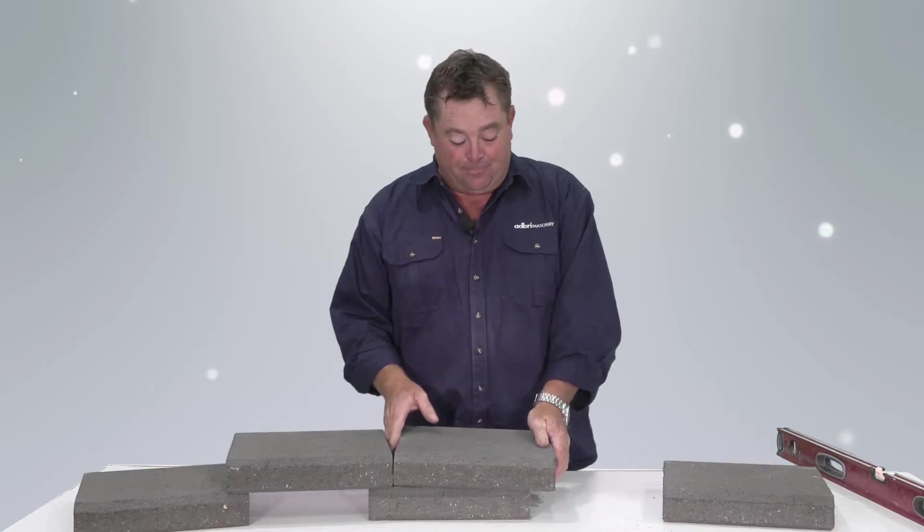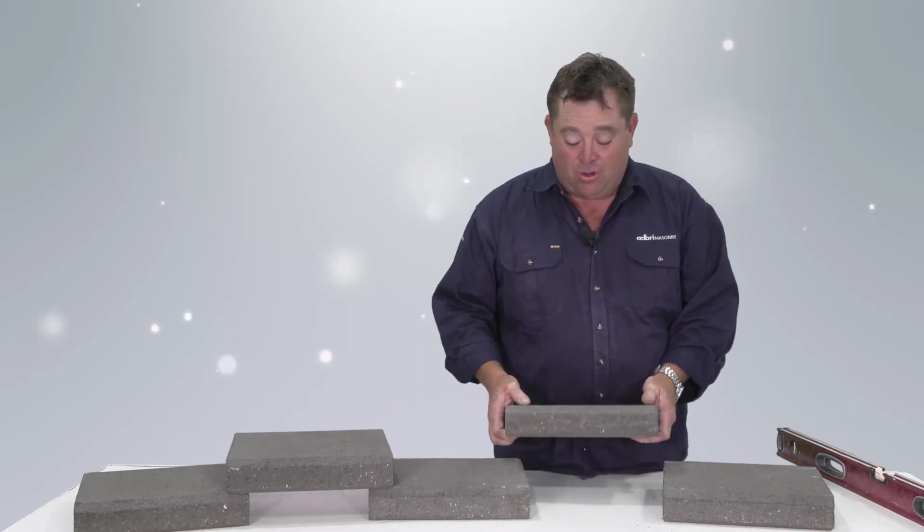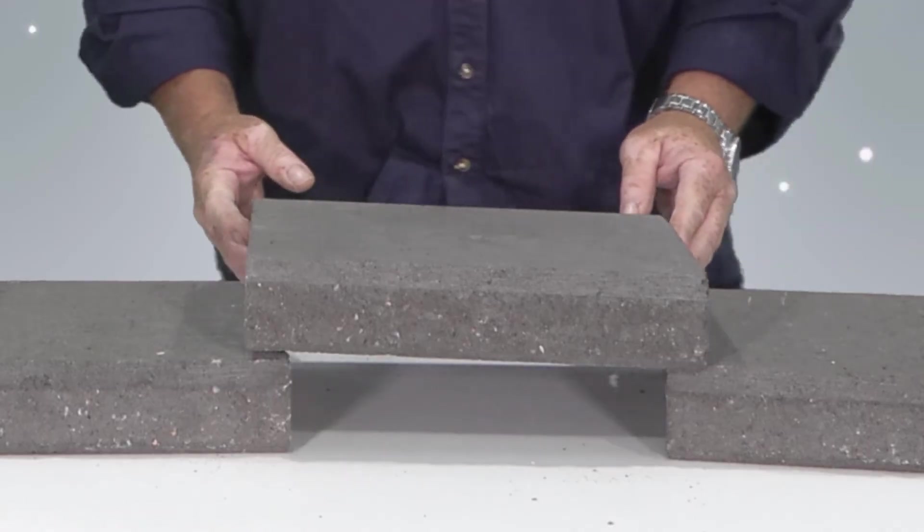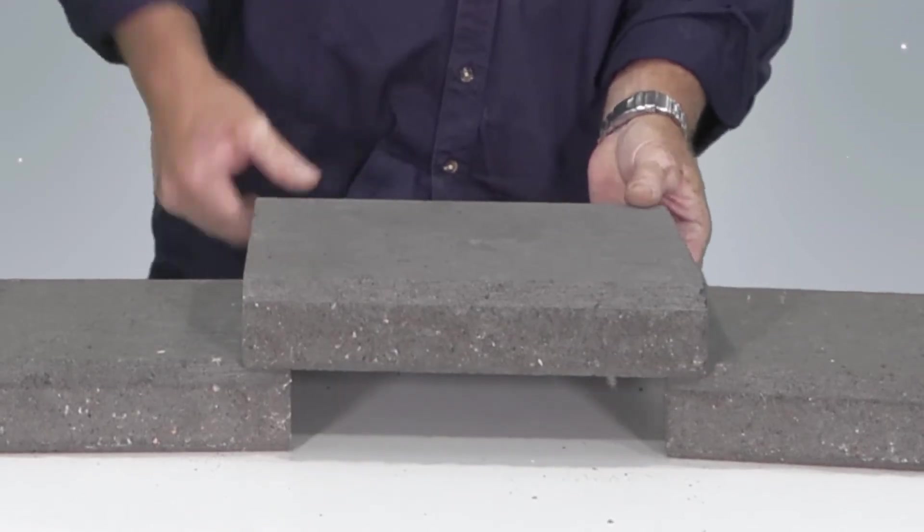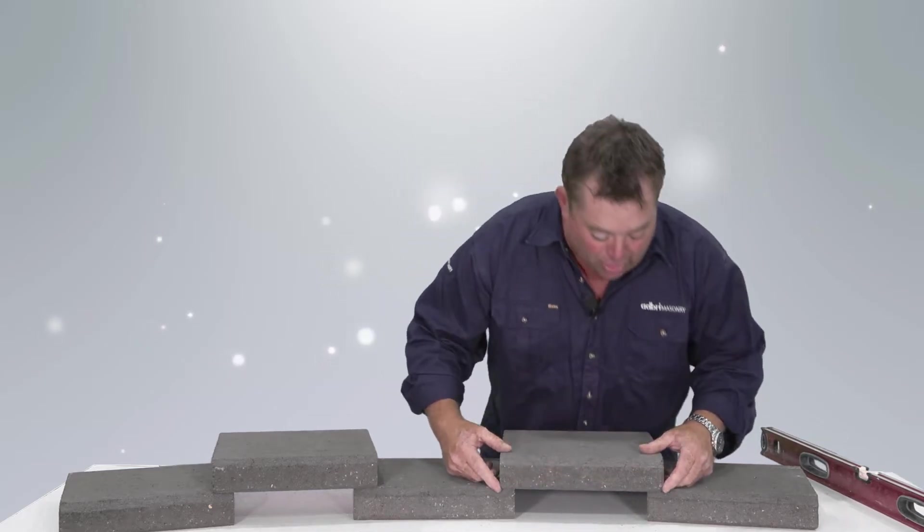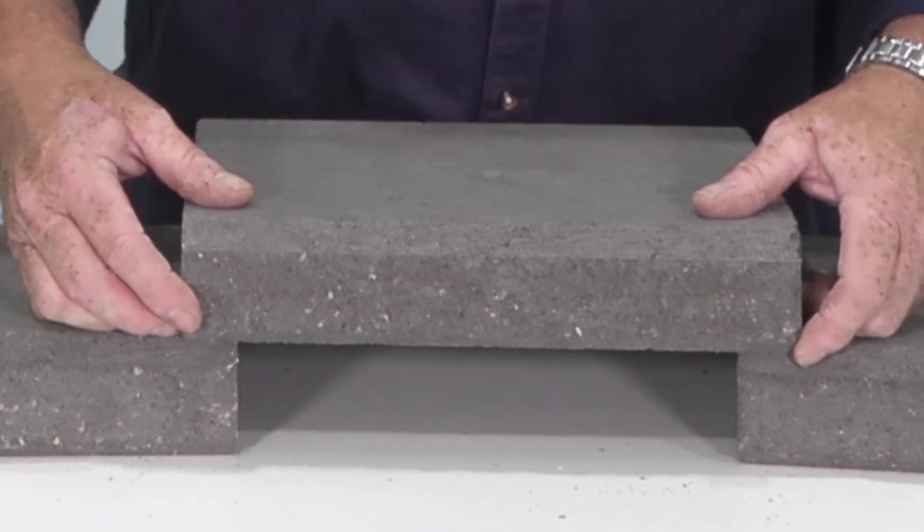The next step is to lay them out dry, leaving a gap between two pavers, getting the back corners to join up and having an overlay at the front on both sides that's equal.